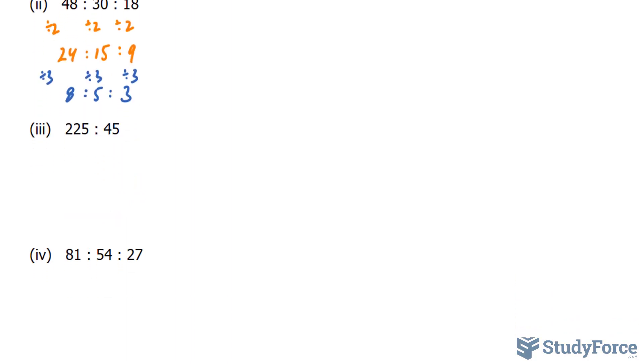We have 225 to 45. Both of these numbers are equally divisible by 5, but I know they're both divisible by 45. If I divide this by 45, I end up with 5. So I'll write down 45 and 45 here. So this divided by 45 is 5, and that divided by 45 is 1. Luckily, I knew that, and I was able to get 5 to 1.